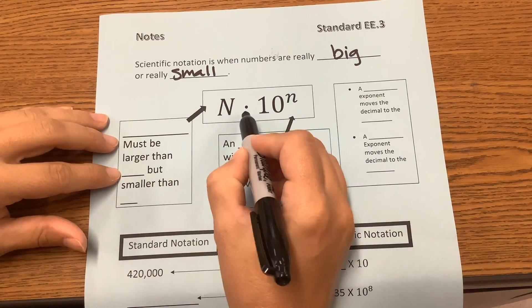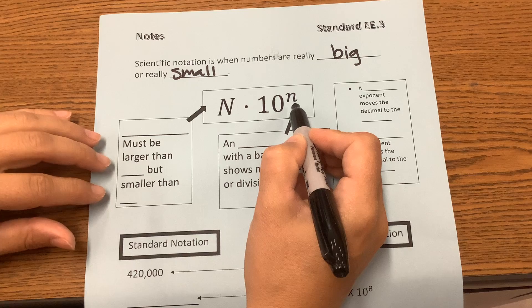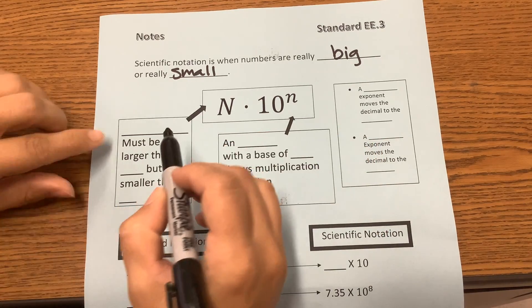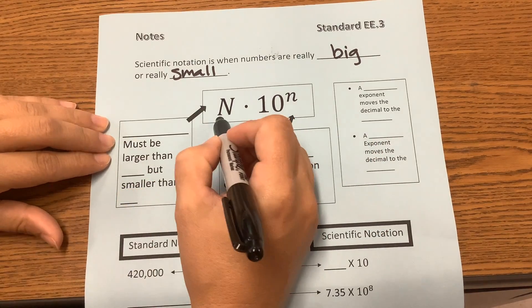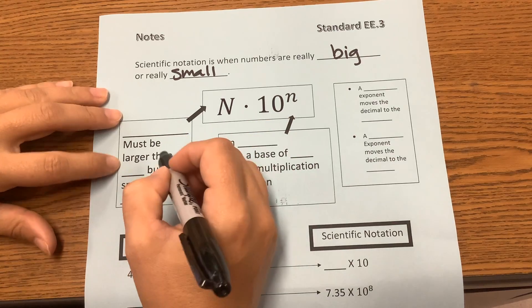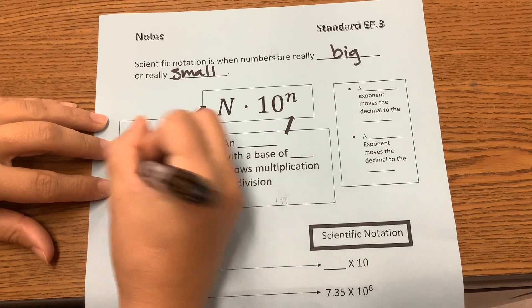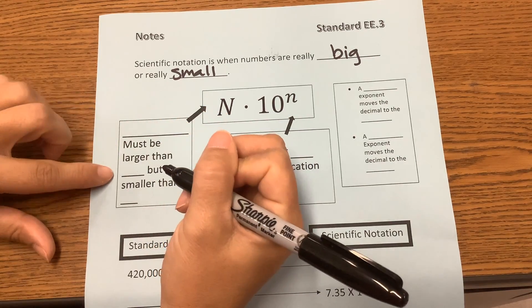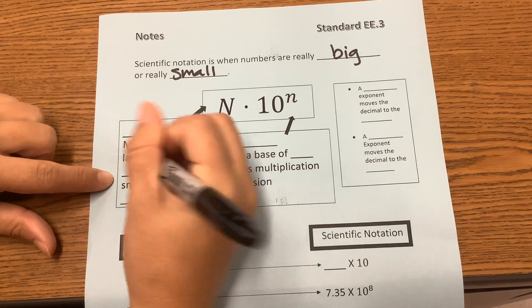Notice we have a number times 10 to the nth power. So the number N, the base, must be larger than—it has to be larger than 0 but smaller than 10.